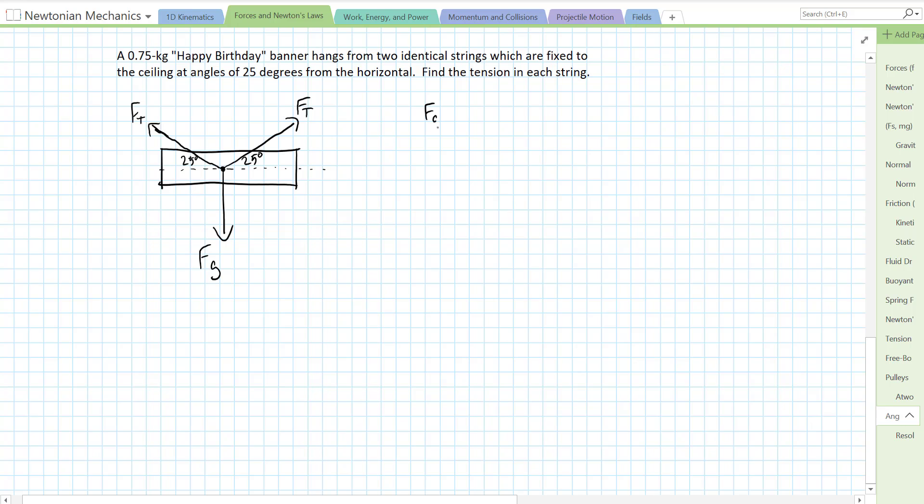Okay, so first of all, force of gravity is equal to mg, so we can calculate the weight of the sign: 0.75 kilograms times 9.81 meters per second squared. The force of gravity then ends up being equal to, calculated, 0.75 times 9.81: 7.35, 7.36.